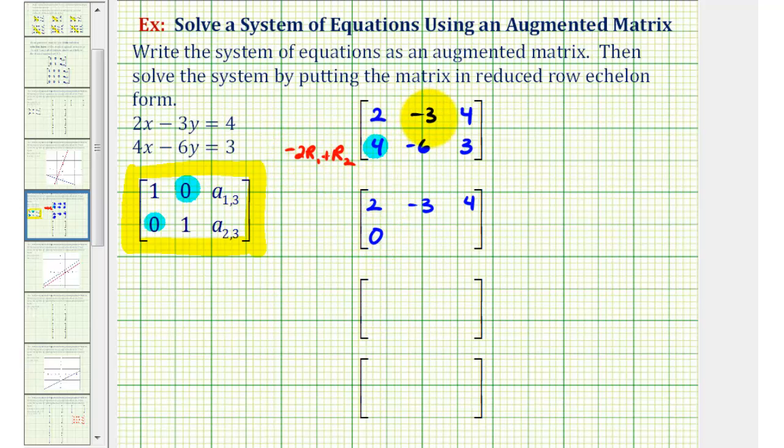And now we'll have negative two times two plus four, that's zero. Negative two times negative three, that's positive six, plus negative six. Notice how that's also zero. And then we have negative two times four, that's negative eight, plus three, that's negative five.